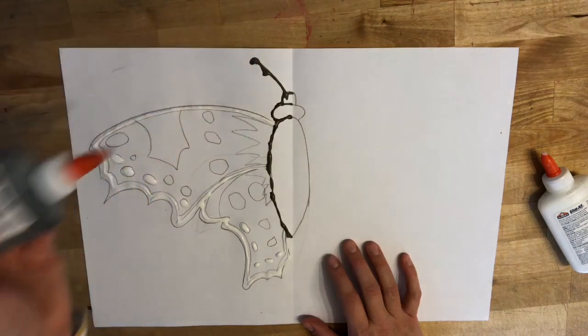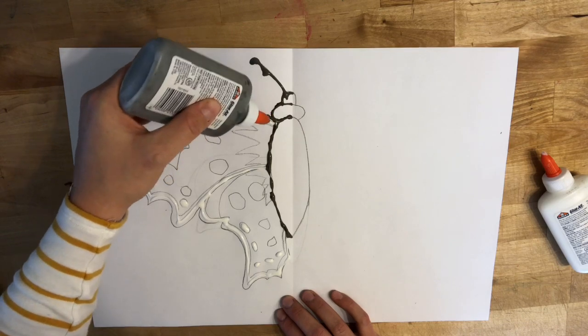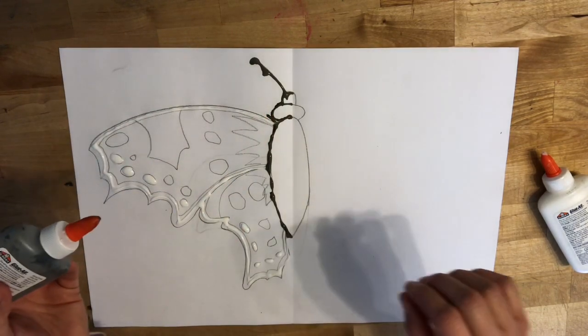I'm going to go all the way around my butterfly like this, making sure I'm not making big puddles. I'm drawing a line with my glue.